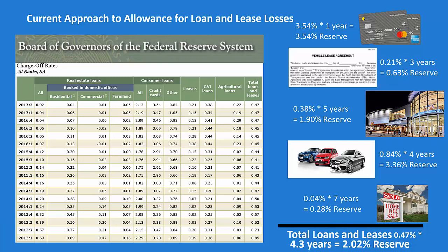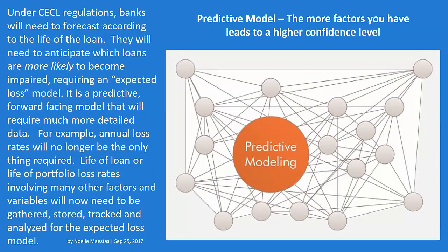So if we'll look at the lease on the right here, if we say, all right, we're averaging an annualized charge-off rate of 0.21% for leases, and the leases on average have a life of three years, then I'm going to set up a reserve of 0.63%. If I go all the way to the very bottom, I take all my loans and leases, average charge-off for everything was about 4.47%, and the total average of all my loans blended together is about 4.3 years, I get a reserve of about 2.02%. Under CECL regulations, banks are now going to need to do it at the loan level, not the portfolio level, at the loan level.